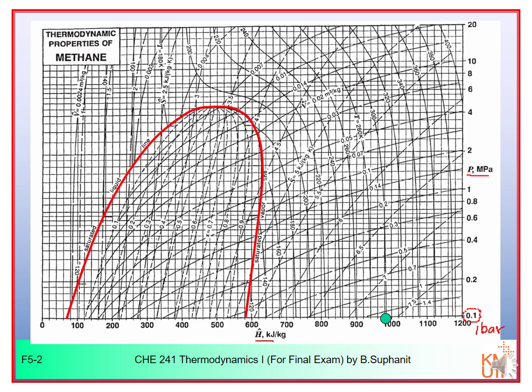We want to change the methane at this condition into liquid phase. So we have to move from 300 Kelvin to the two-phase zone — the vapor-liquid mixture zone. One way we can do that is to decrease the temperature; if we decrease the temperature, we can change the gas into liquid phase.